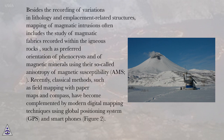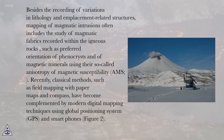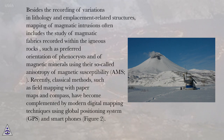Besides recording variations in lithology and emplacement-related structures, mapping of magmatic intrusions often includes the study of magmatic fabrics recorded within igneous rocks, such as preferred orientation of phenocrysts and of magnetic minerals using their anisotropy of magnetic susceptibility (AMS). Recently, classical methods such as field mapping with paper maps and compass have been complemented by modern digital mapping techniques using global positioning system (GPS) and smartphones.